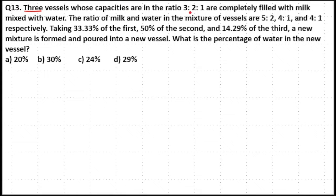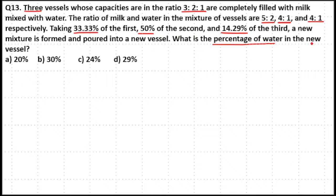Three vessels whose capacities are in the ratio 3:2:1 are completely filled with milk mixed with water. The ratio of milk and water in the mixtures of the vessels are 5:2, 4:1, and 4:1 respectively. Taking 33.33% of the first, 50% of the second, and 14.29% of the third, a new mixture is formed and poured into a new vessel. What is the percentage of water in the new vessel?